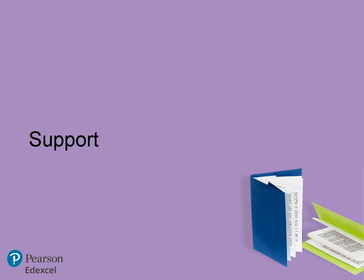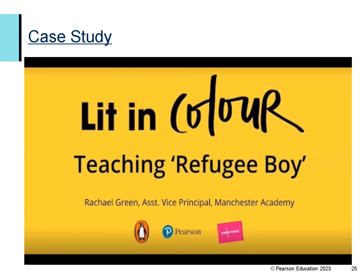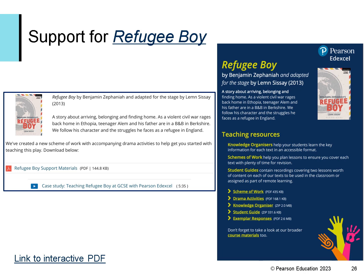We are now coming to the end of this presentation, but I just wanted to show you the support we have for Refugee Boy in particular, but also the GCSE English Literature course as a whole. This is a YouTube video for a case study from Manchester Academy who are teaching Refugee Boy to their students — it is possible to play this straight from the slide, or you can click on the link in the title to view it any time. Here is the main area for support for Refugee Boy on our website. We have put all of the links into an interactive PDF so you can access everything from one place, including a scheme of work, drama activities, a knowledge organiser, a student guide and some exemplar responses. You can also access the video of the case study from the Lit in Colour area of the website.